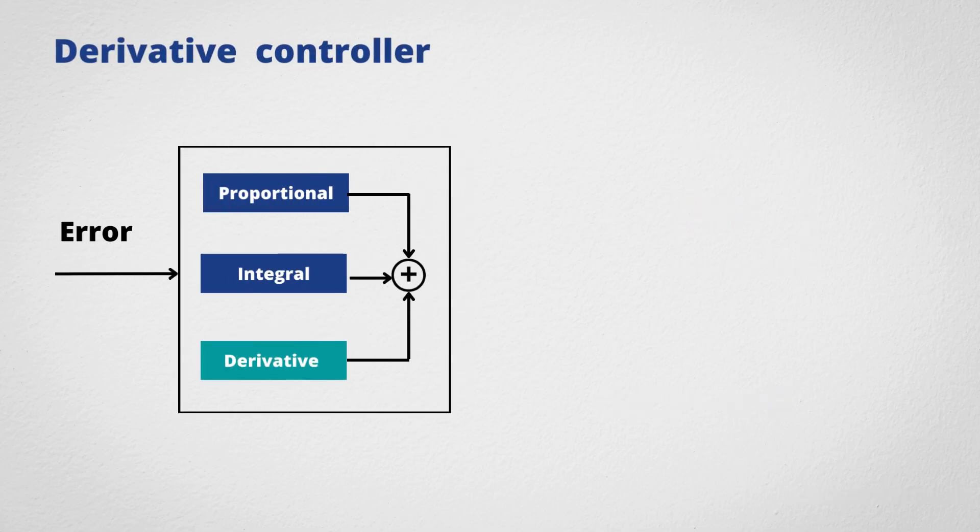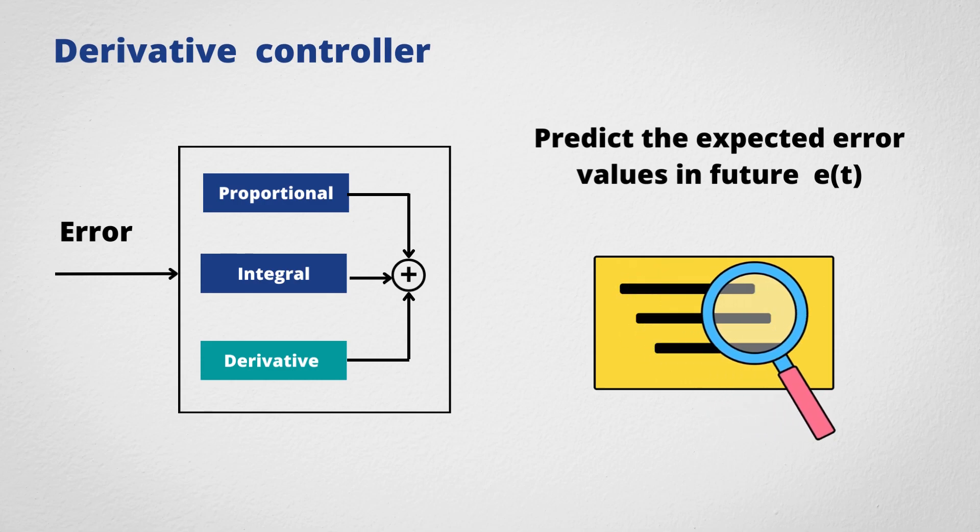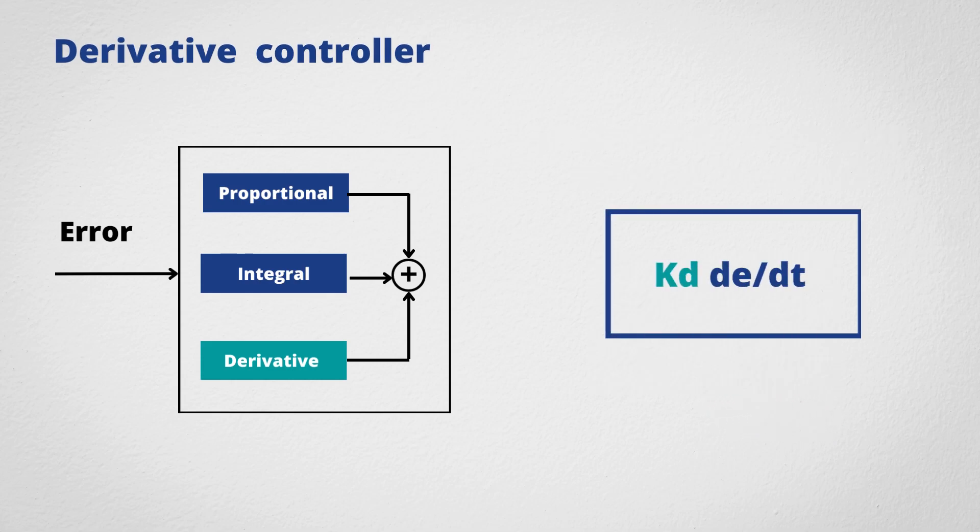The derivative is used to predict the expected error values in the future based on the present values. Its output depends on the rate of change of error with respect to time multiplied by the derivative constant.